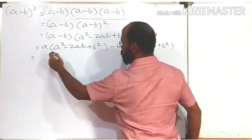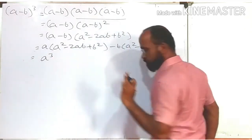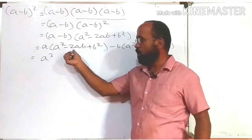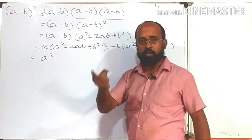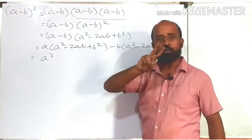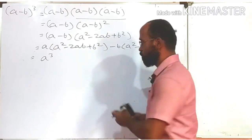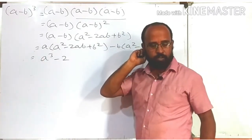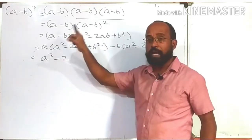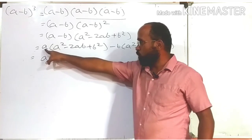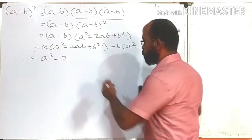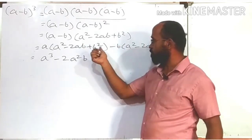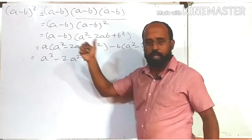So: a multiplied by (a² - 2ab + b²), and minus b multiplied by (a² - 2ab + b²). Starting with the first part: a × a² gives a³; a × (-2ab) — the coefficient of a is 1, so 1 × 2 = 2, and we add the indices of like variables during multiplication, so a¹⁺¹ = a², giving -2a²b.